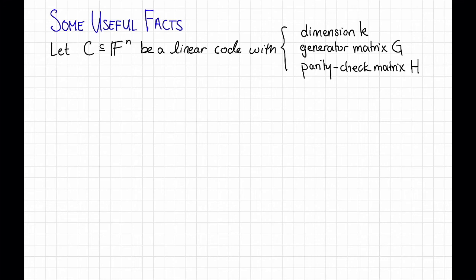So let C be a linear code subset of f to the n that has dimension k, generator matrix G, and parity check matrix H.